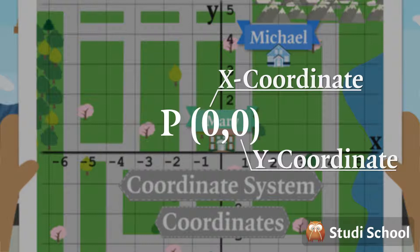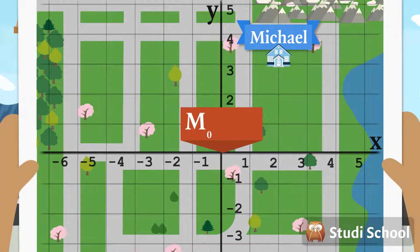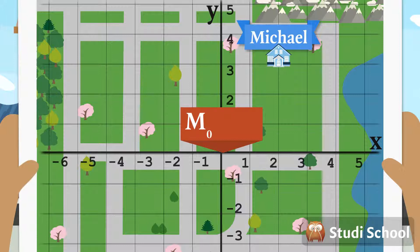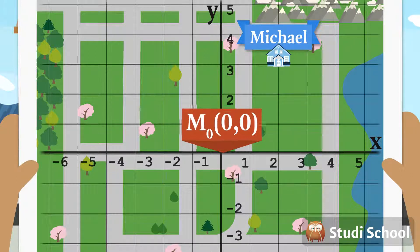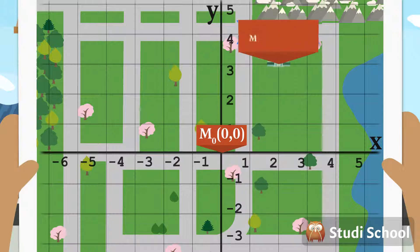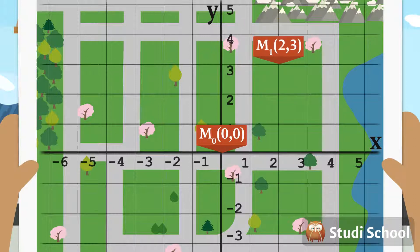Call the position of Mary's house M0. The X-coordinate of that point is 0 and 0. Call the position of Michael's house M1. The coordinates for M1 are 2 and 3. The X-coordinate is always first and the Y-coordinate is second.